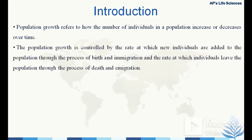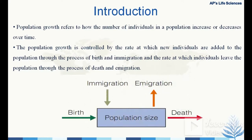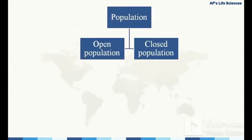Population growth is particularly controlled by the rate at which new individuals are added — that is, through birth and immigration — or the rate at which individuals leave the population through death and emigration. This population can be classified into two different types.